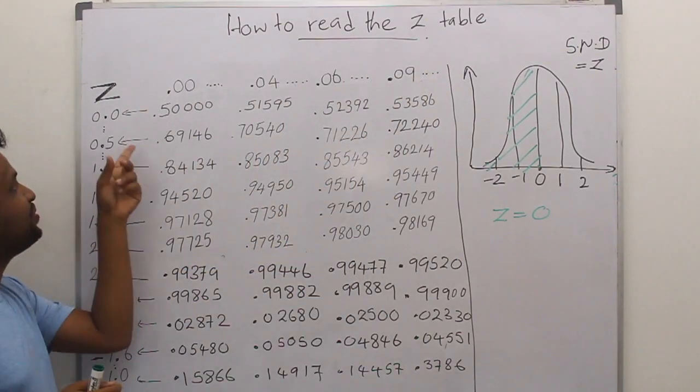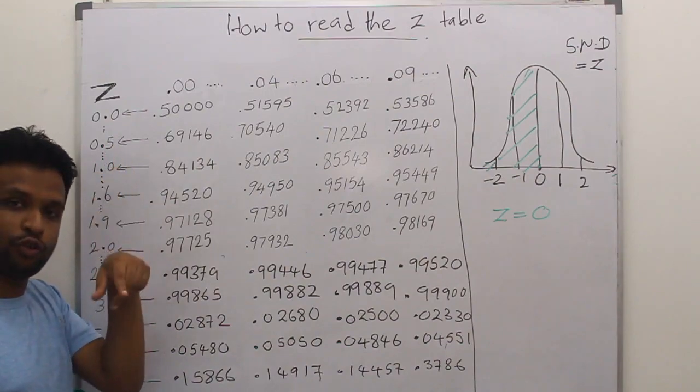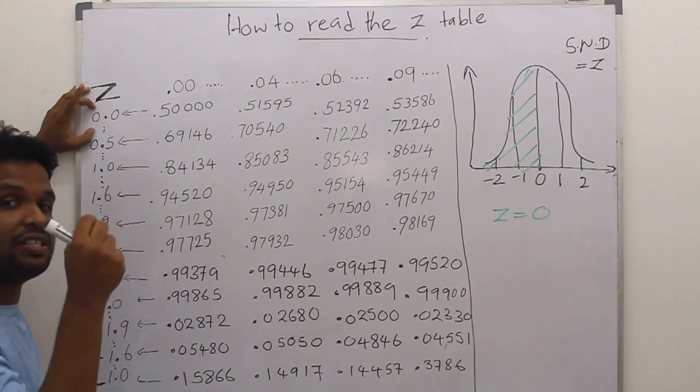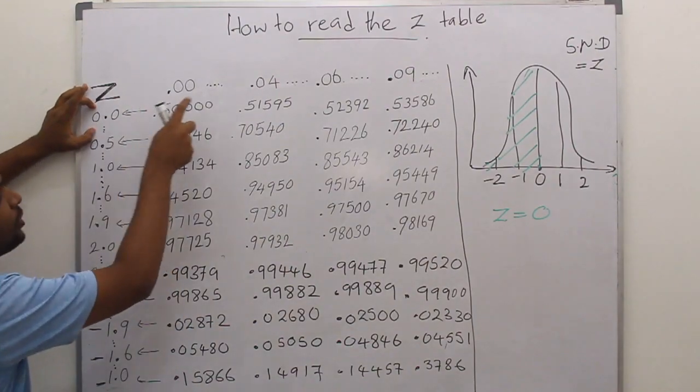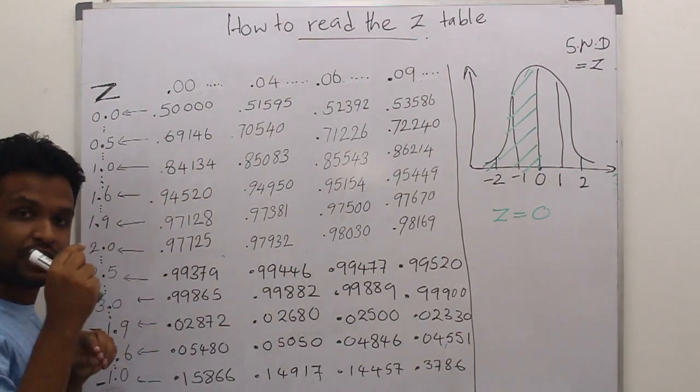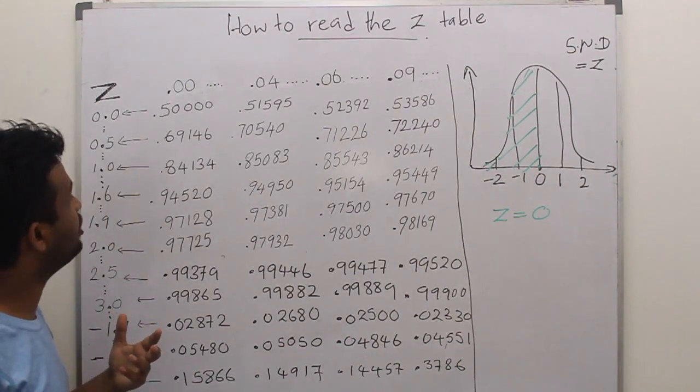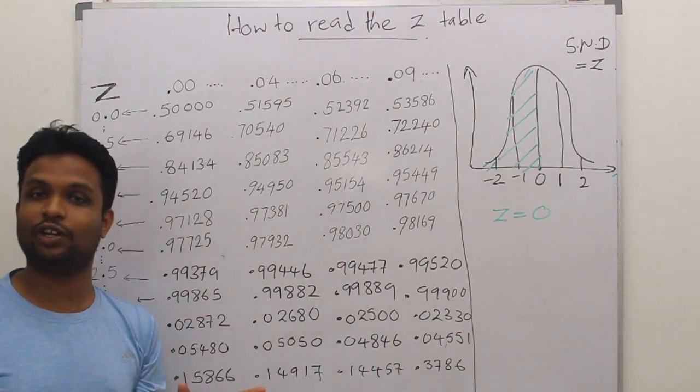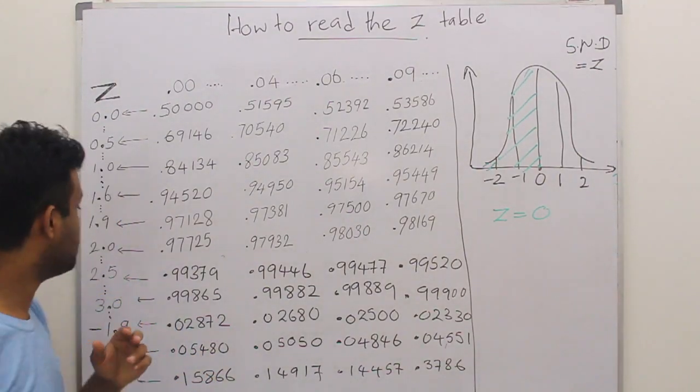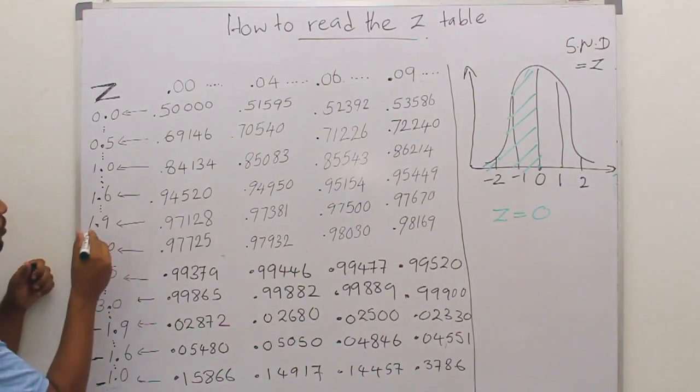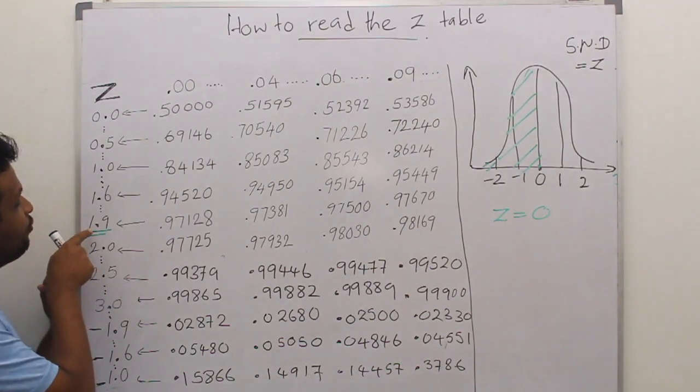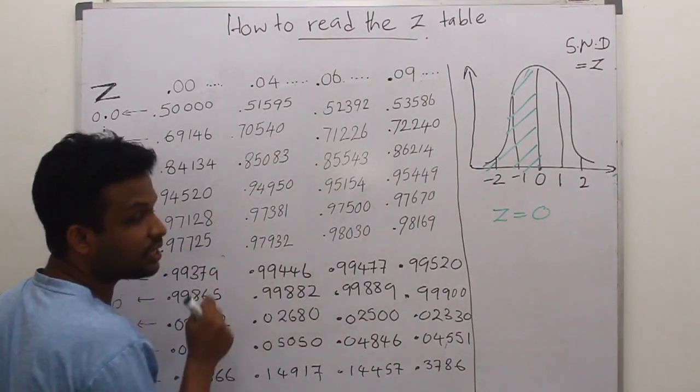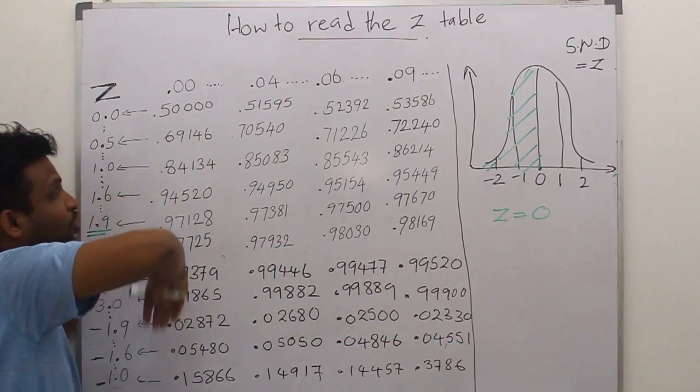If you are interested in 0.04, you have to get 0 from here and add 0.04 to that. So 0 plus 0.04 is 0.04. And if you are interested in 1.96, the most common value in 95% confidence interval, you have to get 1.9 from here and add 0.06.